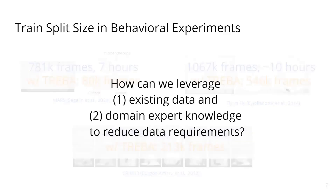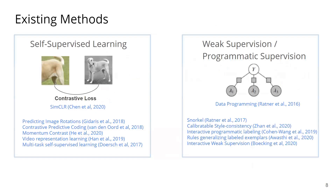The question we are studying is: how can we leverage existing data and domain expert knowledge to reduce data requirements? One group of existing work learns their representation using techniques such as contrastive loss and other pretext tasks defined ahead of time. Another group of work leverages simple programs that people can write by hand to programmatically supervise model training.